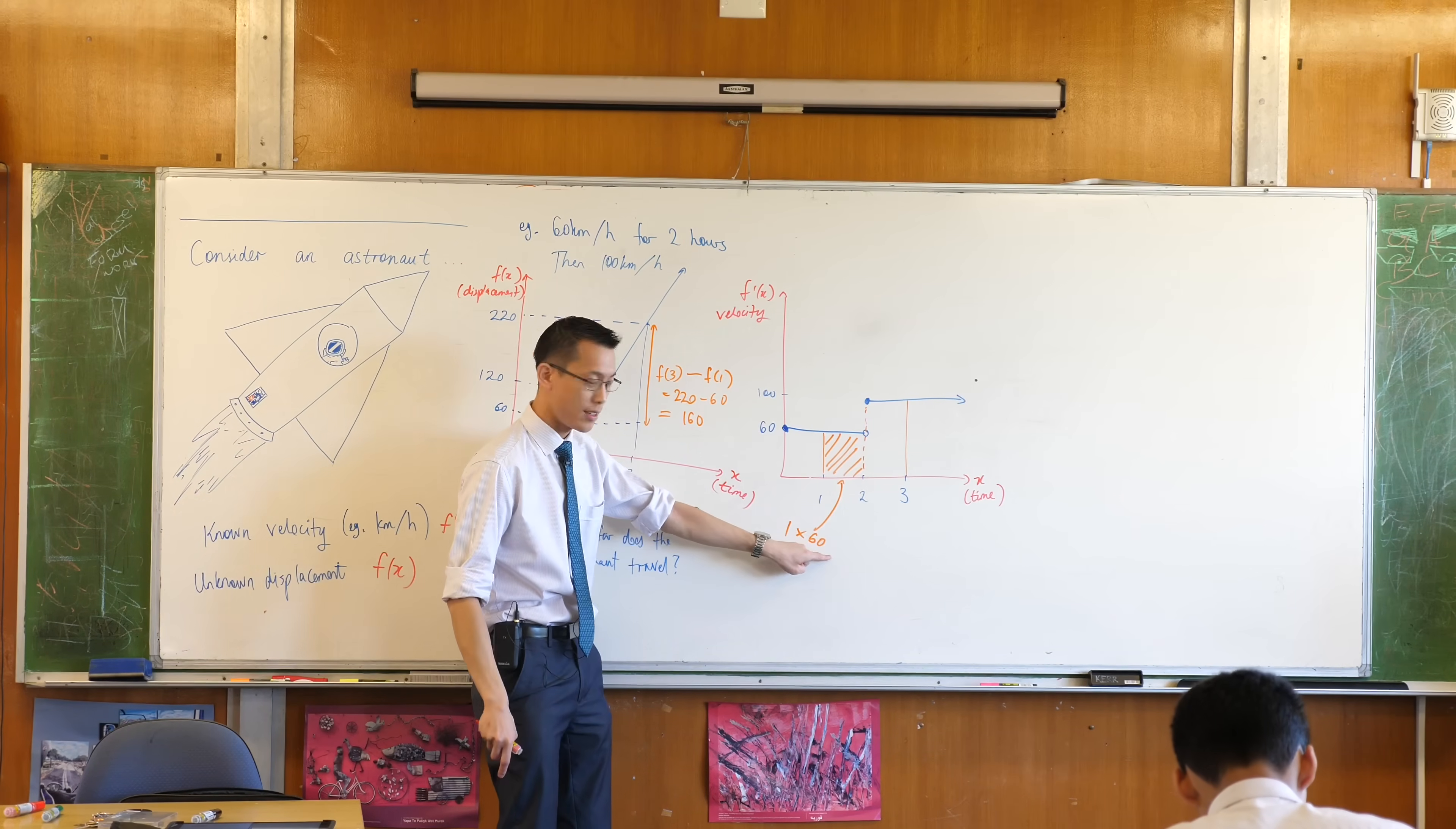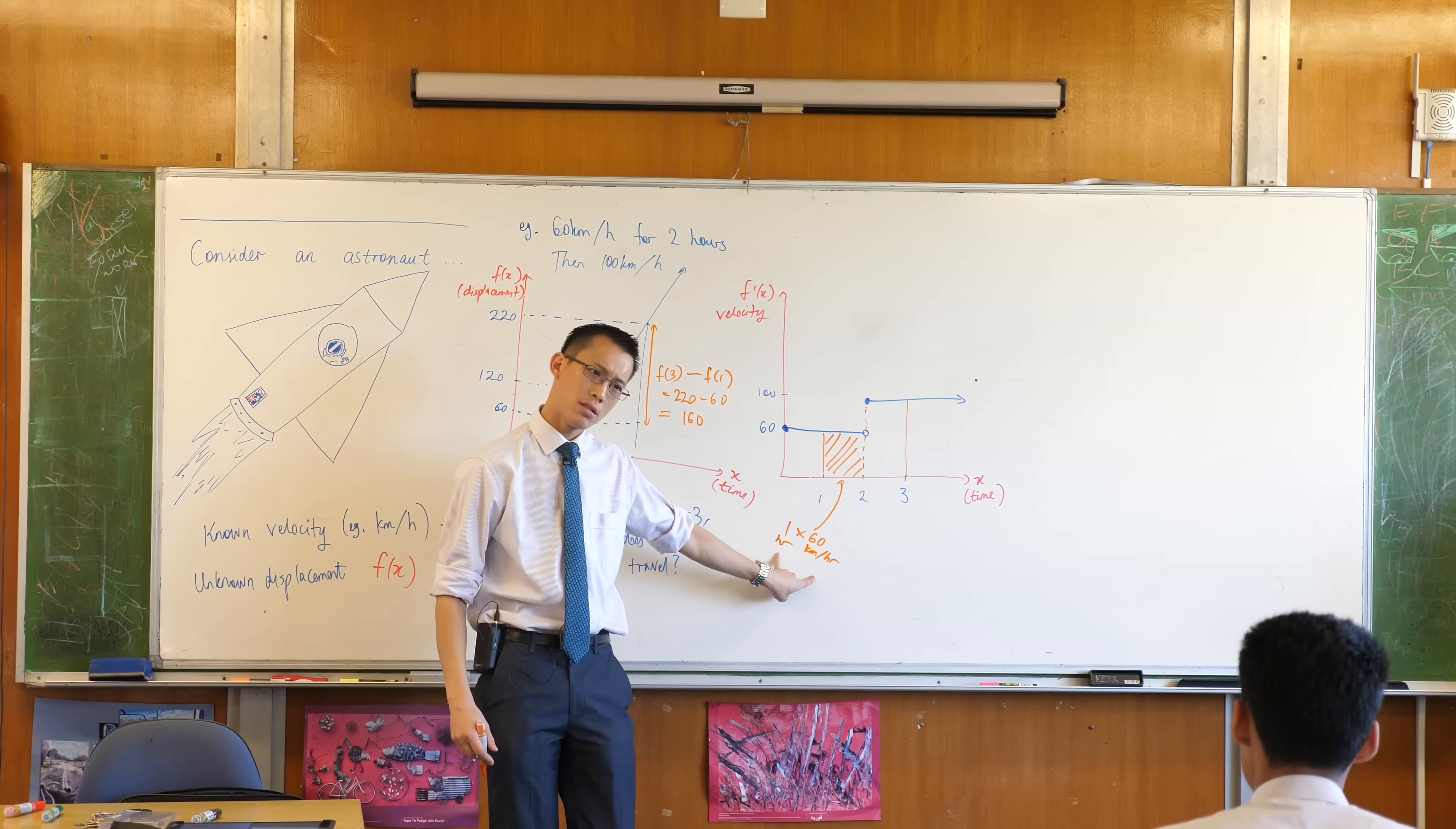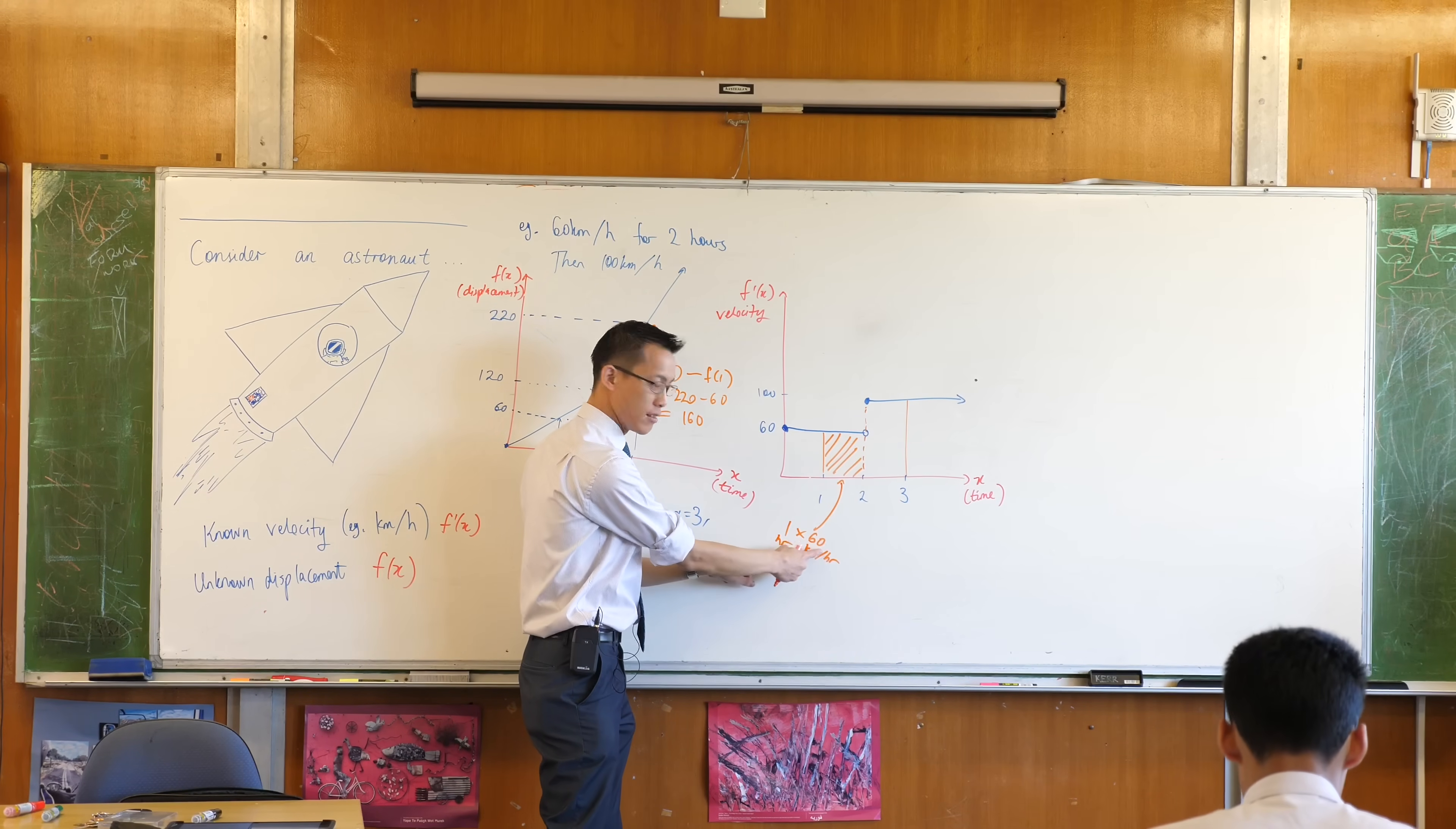So this is one times 60 because it's one hour times 60 kilometers per hour. You can even see what happens with the units. Do you see why we write 'per hour' as divided by hour? Because the hours literally cancel, and that's what leaves you with 60 kilometers.